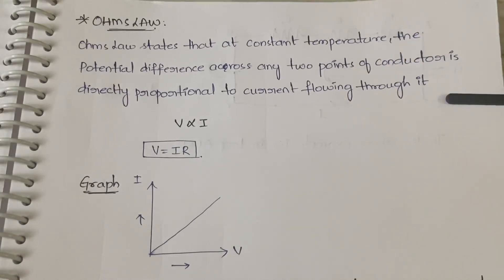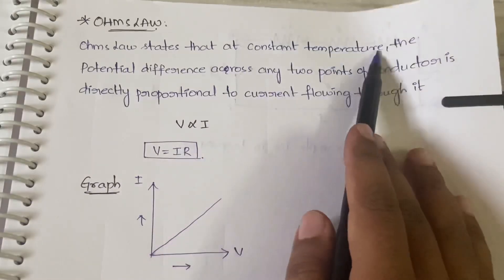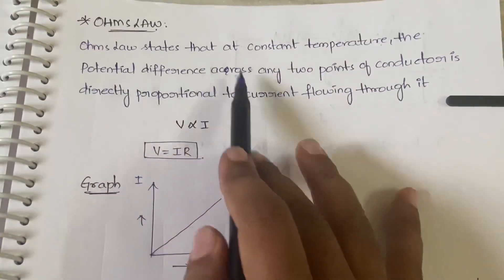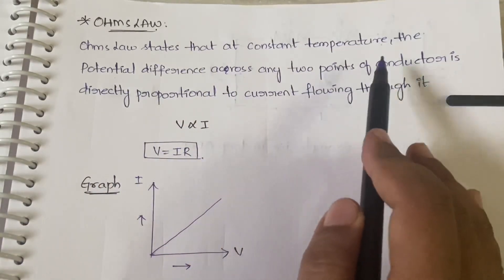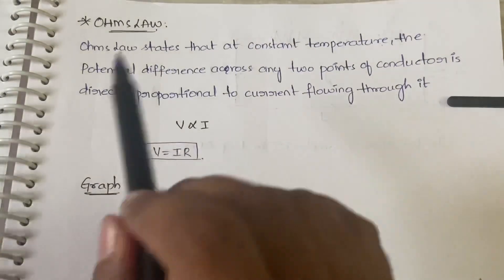I guess you already know, but let me give you a revision. Ohm's Law states that at constant temperature, the potential difference across any two points of the conductor is directly proportional to the current flowing through it.